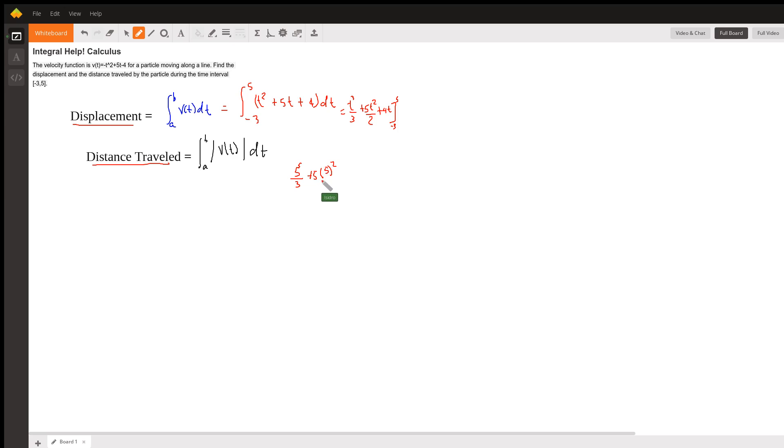We substitute 5: 5 cubed over 3 plus 5 times 5 squared over 2 plus 4 times 5. Then we subtract negative 3 evaluated: negative 3 to the third power over 3 plus 5 times negative 3 squared over 2 plus 4 times negative 3. Put that in the calculator to see what we get.